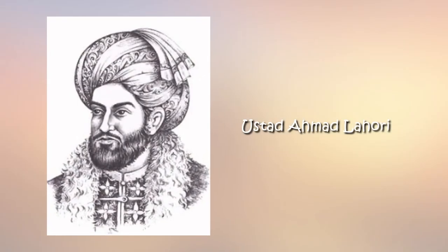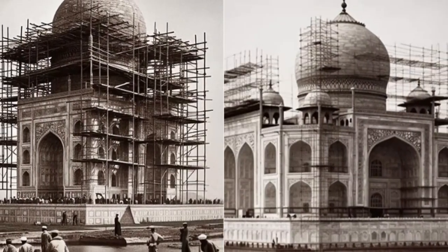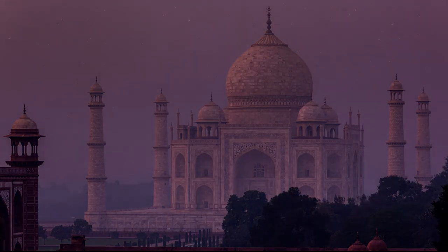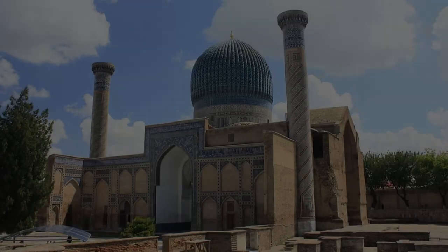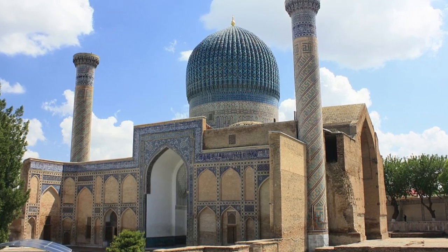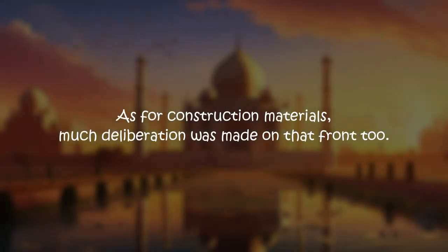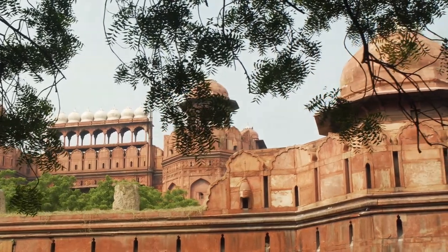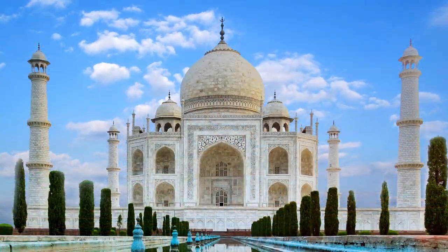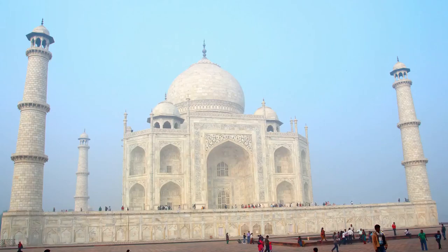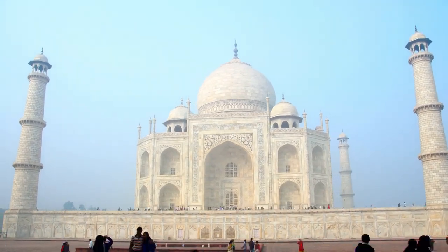Ustad Ahmad Lahori was appointed as the main architect. He, along with other skilled masterminds of construction, were put in charge of designing the Taj Mahal. The design incorporated and expanded on traditions of Indo-Islamic and earlier Mughal architectures, with specific inspiration from the Guri Amir, the Tomb of Timur, Humayun's tomb, Itmad-ud-Daulah's tomb, and Shah Jahan's own Jama Masjid in Delhi. Shah Jahan chose high quality white marble, specifically Makrana marble, renowned for its pristine white colour, intricate detailing, and durability to ensure the Taj Mahal withstood the test of time.